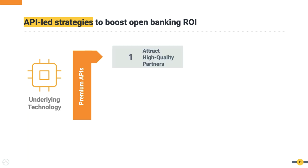A bank can use premium APIs to attract high-quality partners. You can attract third parties like fintechs to work with you, making it easier for them and creating a culture that welcomes collaboration by having fintechs do less when working with you. You can also provide them with higher-quality enriched data — either in the form of free APIs in addition to normal open banking APIs, or as enriched data that you monetize and build a business model around.